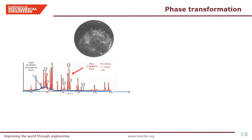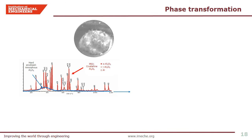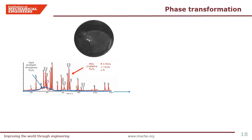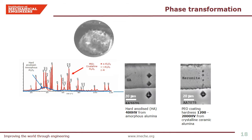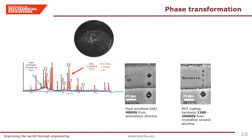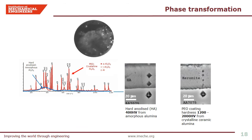Now let's look into phase transformation. We talk about high-energy plasma discharges, alloy melting, fusion and recrystallization, and their subsequent effect on phase transformation of the growing oxide layer. The blue line is an X-ray diffraction trace of a hard anodized coating, showing an amorphous hump. The red traces are crystalline peaks, primarily alpha and gamma aluminum oxide from the PEO coating. Cross-sectional images on the right show the hard anodized and a PEO coating on the same alloy, showing coating thickness uniformity and hardness indentations. Micro-indentation hardness measurements confirmed that the resulting PEO coating has typically 3 to 5 times higher hardness than a hard anodized coating.